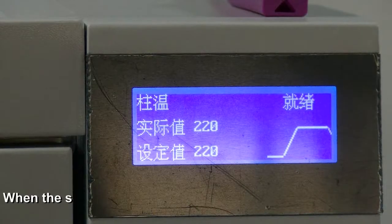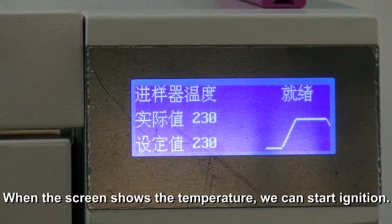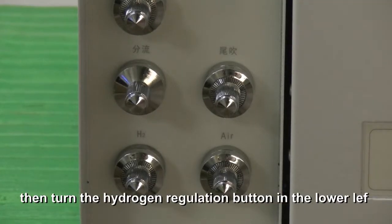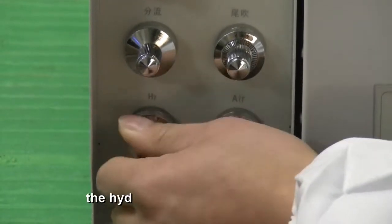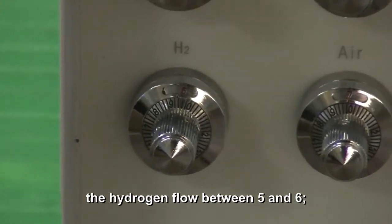Ignition. When the screen shows the temperature, we can start ignition. Before ignition, press signal 1. The screen shows a value of 0. Then turn the hydrogen regulation button in the lower left corner and adjust the hydrogen flow between 5 and 6.